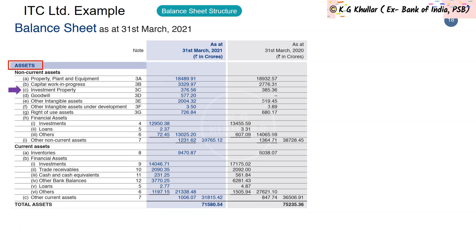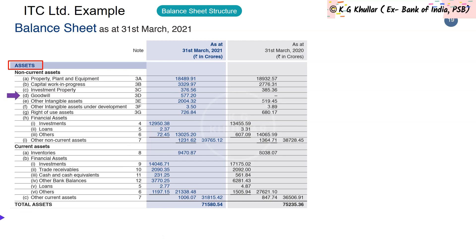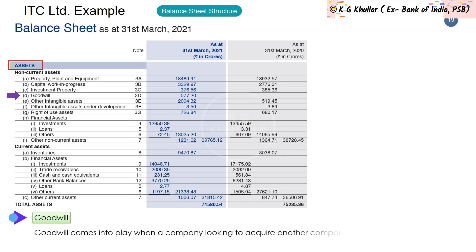Investment Property is also a non-current asset — it is property that is owned or leased for rental income or capital appreciation. Another important non-current asset is Goodwill, which is an intangible asset in accounting. The concept of goodwill comes into play only when a company is looking to acquire another company and is willing to pay a price premium over the fair market value of the company's net assets.